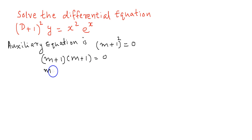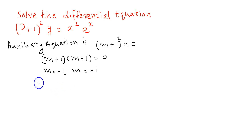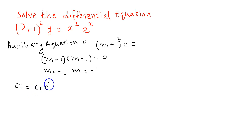Therefore we get the roots as m = −1. In the other case also, m = −1. Here both roots are identical. Since the roots are the same, we have to use the formula for identical roots for finding the complementary function, which is c₁ e raised to mx plus c₂ x e raised to mx.